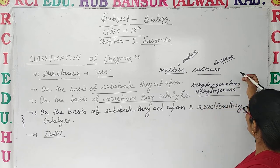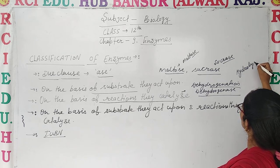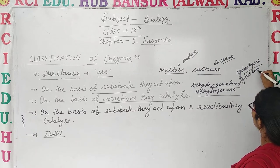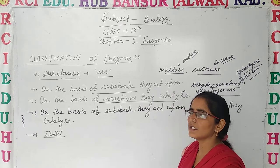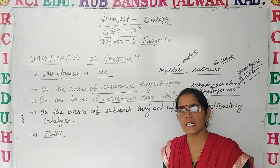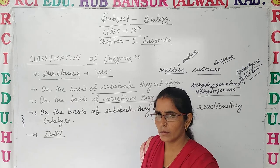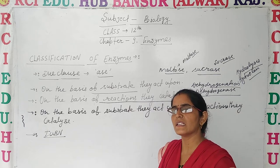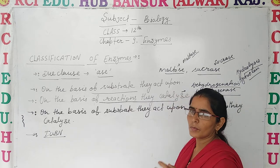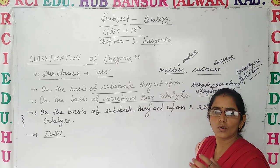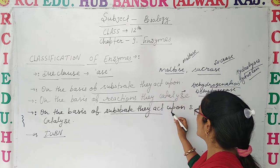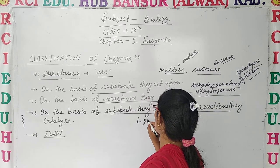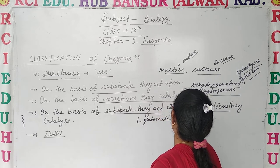The second basis is the type of reaction which the enzyme catalyzes. For example, for dehydrogenation reactions, the enzyme is called Dehydrogenase. For hydrolysis reactions, the enzyme is called Hydrolase. So if we add the suffix '-ase', we can determine the enzyme's proper name. A combined example is L-glutamate dehydrogenase, where L-glutamate is the substrate and dehydrogenase indicates the reaction type.